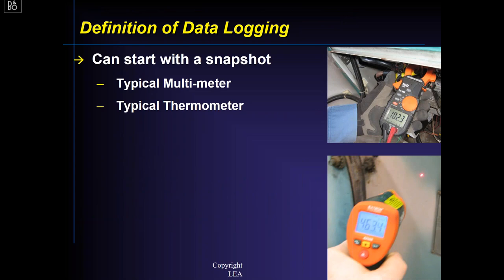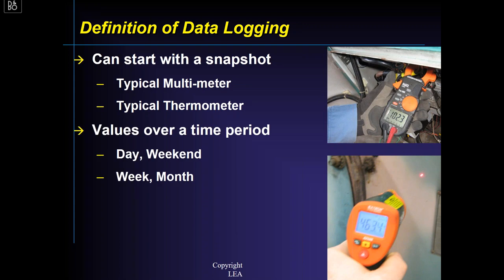A quick definition: what is data logging? It can start with a snapshot — you take your temperature outside every day and write it down at 7 a.m. In an industrial environment, maybe you do that snapshot with a multimeter or a thermometer. But at some point you want those values over time — whether for a day, a weekend, a week, or a month. What's the average daily temperature for the month? That's what we're trying to get: values over differing conditions and different times.